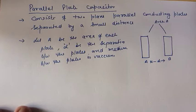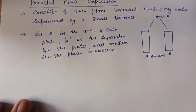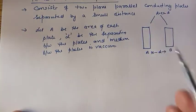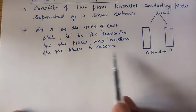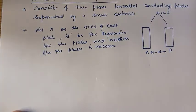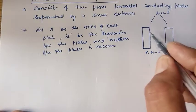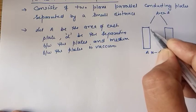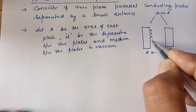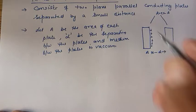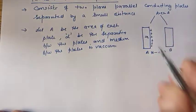The medium between the plates is vacuum. We will discuss in the next video how capacitance changes when a medium is introduced between the plates. For now, the medium is vacuum. Suppose plate A is given a positive charge.